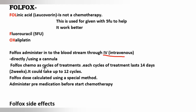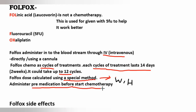FOLFOX chemotherapy has cycles of treatment; each cycle lasts 14 days. It can take up to 12 cycles in total. The precise dose is calculated using a special method, with patient weight and height being most important for dose calculation. Three medications are administered before the chemotherapy.